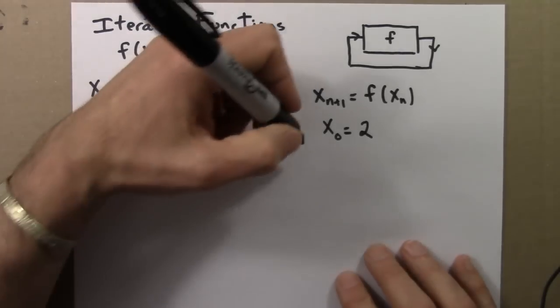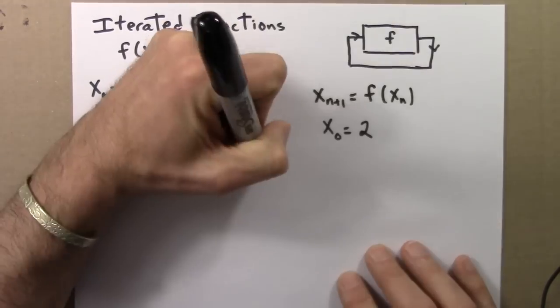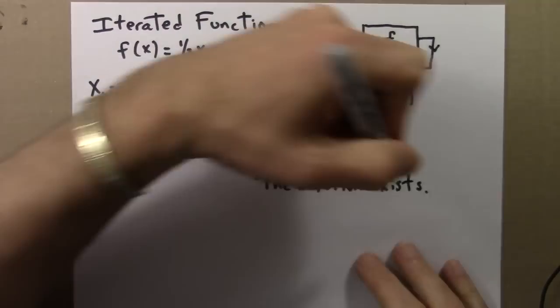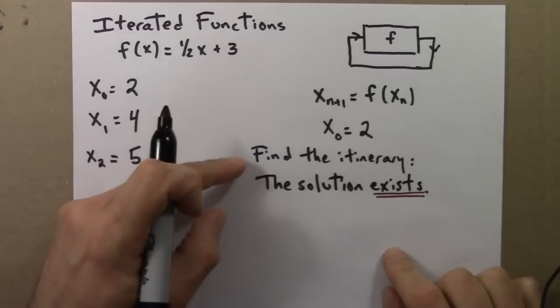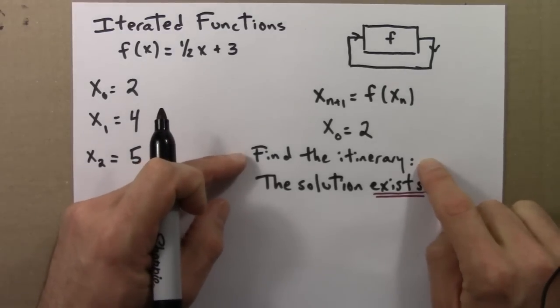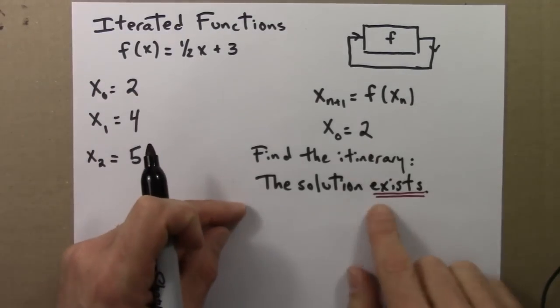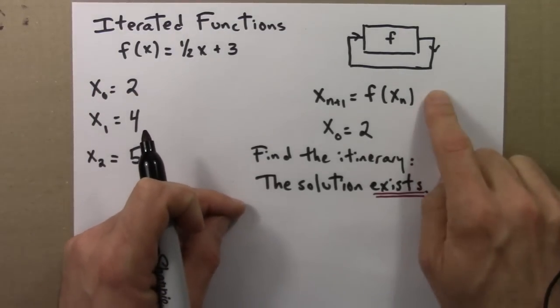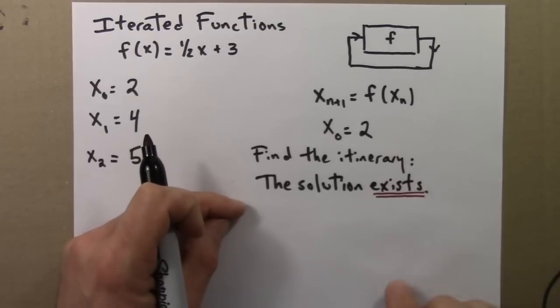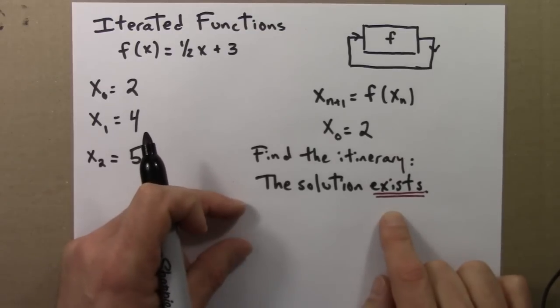So let me write that. So if the problem I gave you was to find the itinerary, given this and this, we know that the solution exists. There's no ambiguity, there's no way this process can fail. So the solution is guaranteed to exist.